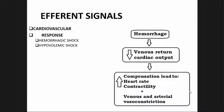Efferent signals: changes in cardiovascular function in hemorrhagic and hypovolemic shock result from the neuroendocrine and autonomic nervous system response to shock, and constitute a prominent feature of both the body's adaptive response mechanism and the clinical signs and symptoms of the patient in shock. Hemorrhage results in diminished venous return to the heart and decreased cardiac output, which is compensated by an increase in heart rate, contractility, and venous and arterial vasoconstriction.